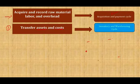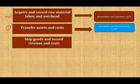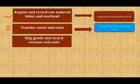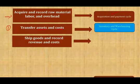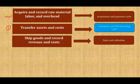Once goods are completed and produced, we sell them and ship them — and this is part of the sales and collection cycle. This is where we account for the shipping documents, sales invoices, and so forth.